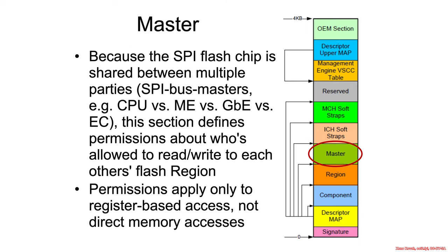The master region has to do with what SPI bus masters — meaning things that are allowed to cause transactions on the SPI bus — are allowed to write to other regions of other devices. This covers whether the CPU/BIOS is allowed to write to the management engine, since the management engine is a different SPI bus master, as is the gigabit Ethernet and the embedded controller. The master region describes permissions about which bus masters are allowed to write to other bus master sections.